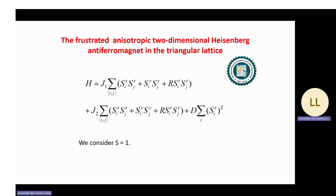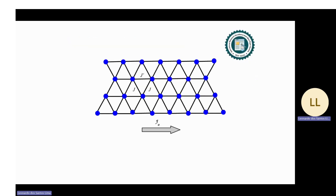We study the frustrated anisotropic two-dimensional Heisenberg antiferromagnet on the triangular lattice. The model is described by the Hamiltonian, where the last term is the effect of single-ion anisotropy. We consider the integer spin case. The lattice is shown in the figure, where we have two different exchange interactions. The arrows represent the flow of spin current droplets.